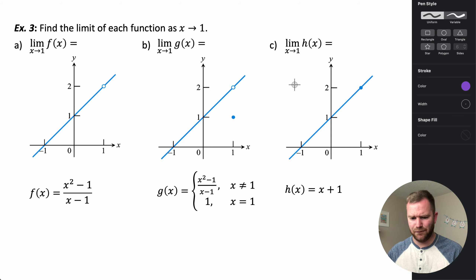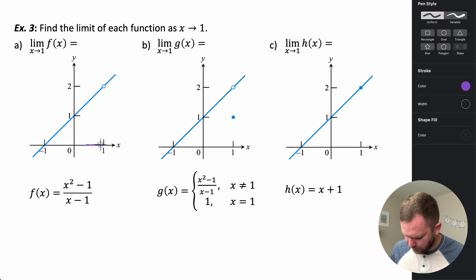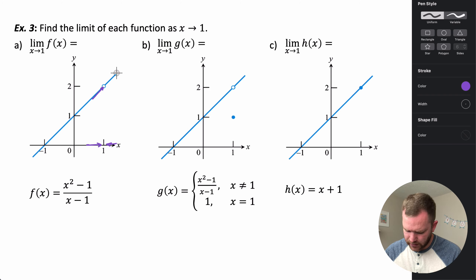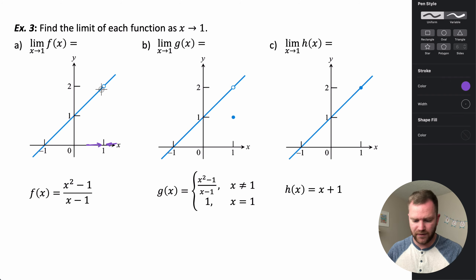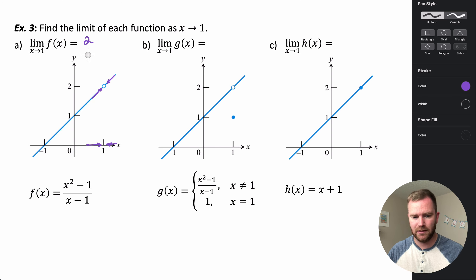So how does this different behavior at x equals 1 impact their limits? The limit is the value that our function approaches as x approaches a specific value from either side. Looking at our function, as we approach x from both the left and the right, the y values are getting closer and closer to 2. It doesn't equal 2 here because it's not defined there, but approaching from both sides, the graph gets closer and closer to 2. So the limit is 2 — it doesn't actually have to be defined, it just has to be approaching that number.